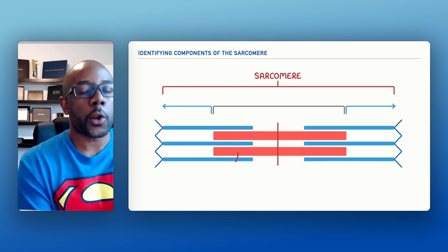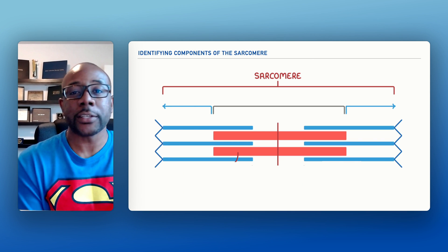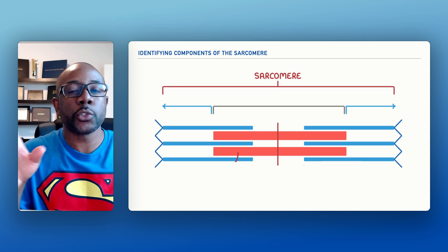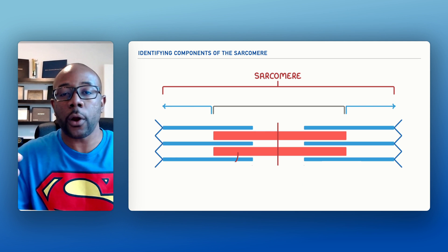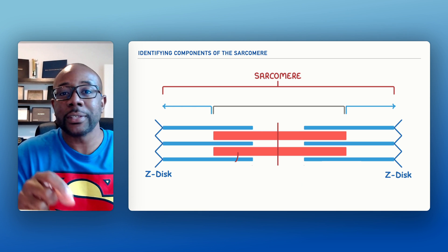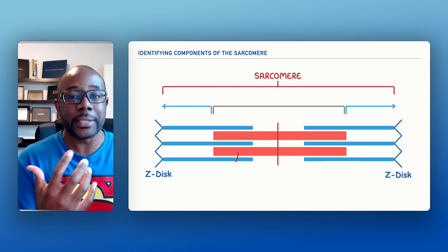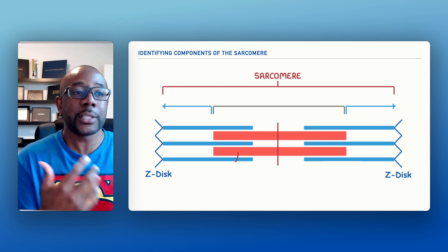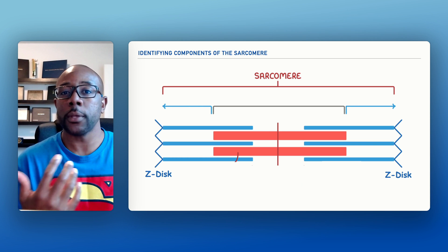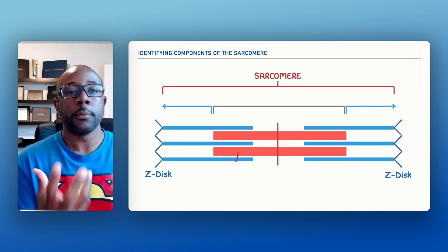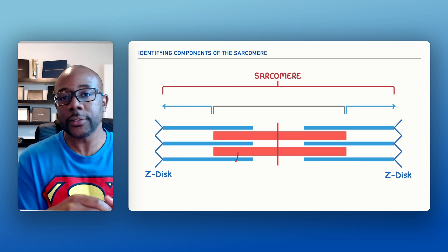So with the sarcomere, one of the first things that I'd like us to do is to identify the structures that we see on the far ends. Now this structure is what we refer to as the Z-disc. We may oftentimes hear the Z-disc referred to as the Z-line, so those terms can be used interchangeably, but for our purposes we're going to call it the Z-disc.